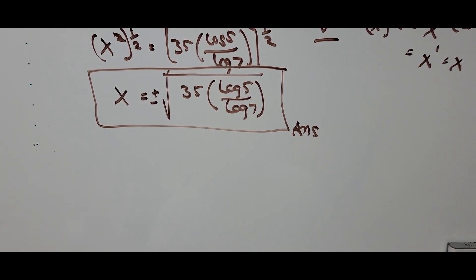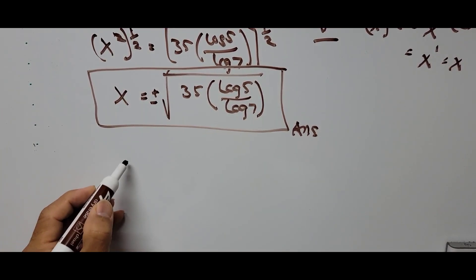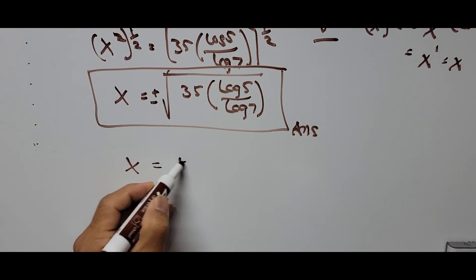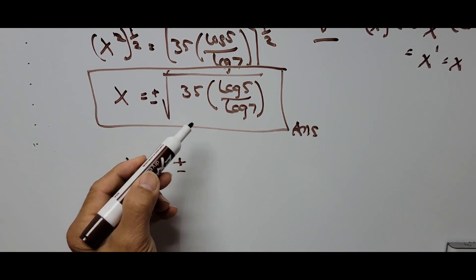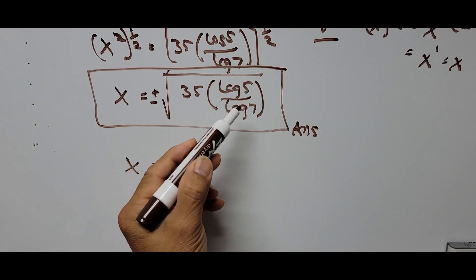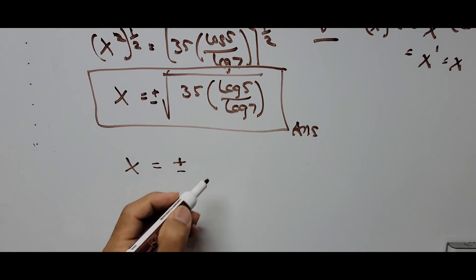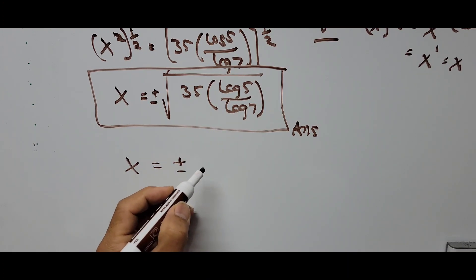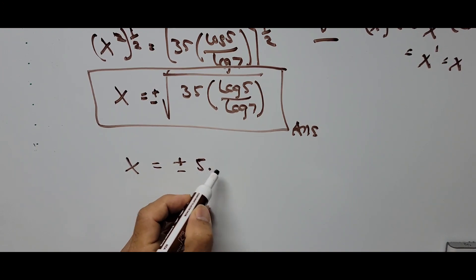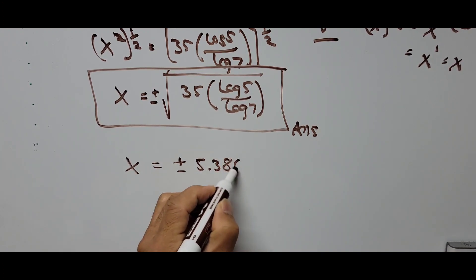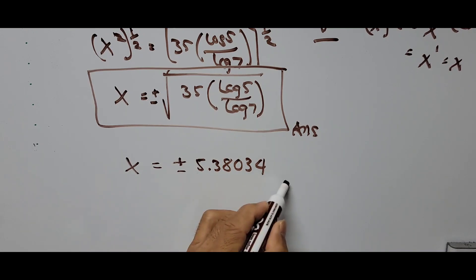To check our answer using our calculator, the value of x is equal to positive and negative the square root of 35 times log of 5 divided by log of 7, which comes out to approximately ±5.38034.